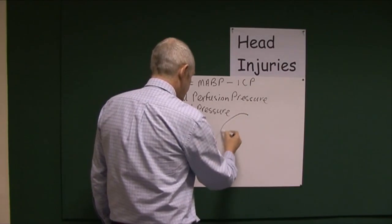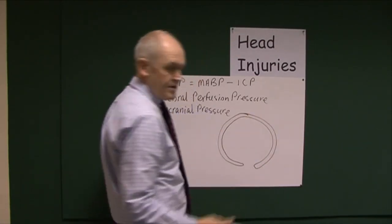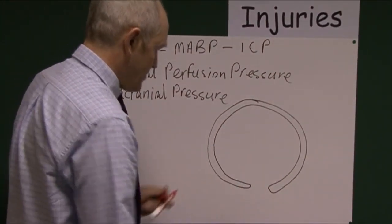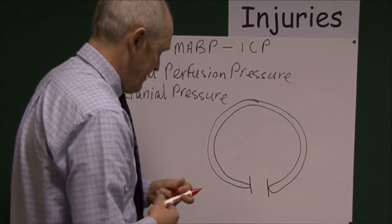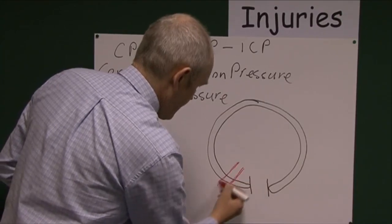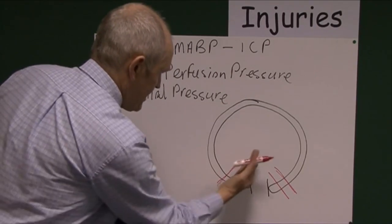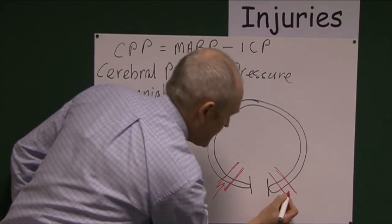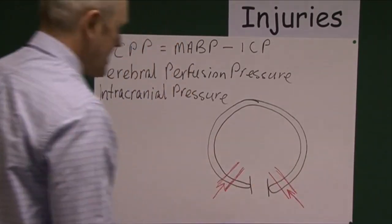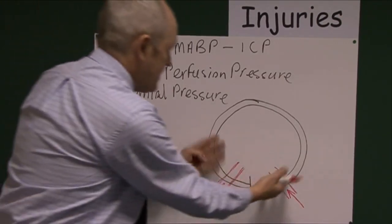Let's imagine we're looking at the vault of the skull, which is closed. Blood has to get into the vault of the skull — the vertebral arteries go through the foramen magnum, and the carotid arteries go in via the holes in the base of the skull. The internal carotid arteries carry blood into the brain and into the cranial cavity.